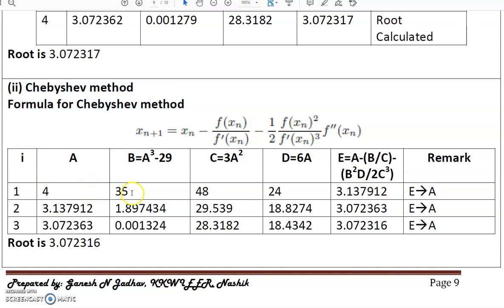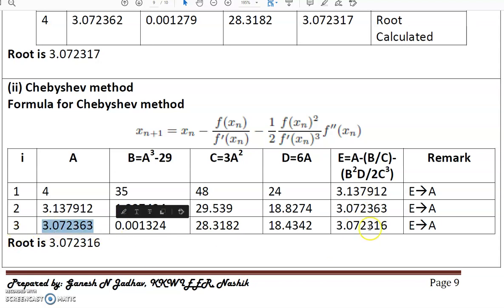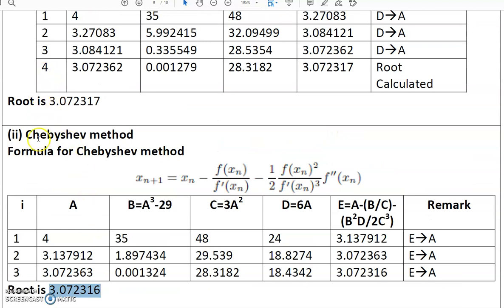With initial value a = 4, calculating b, c, and d and substituting into the Chebyshev formula gives e = 3.137912. This e is used as the initial value for the next iteration. After iteration 3, the value converges to 3.072316, with four digits matching the previous iteration. Newton-Raphson required four iterations, while the Chebyshev method converges in only three iterations. Though it increases complexity by requiring the second order derivative, it increases both accuracy and speed.